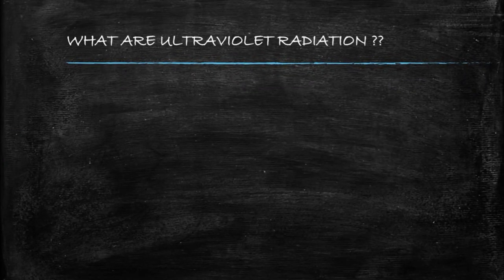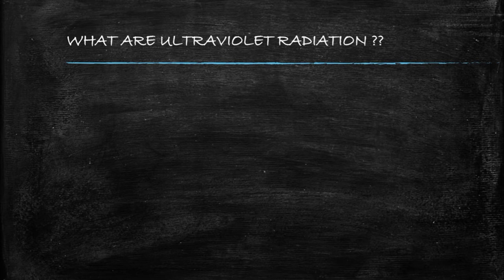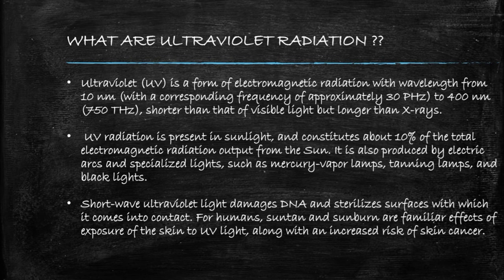Now let's see about ultraviolet radiations. Ultraviolet radiation is present in sunlight and constitutes about 10% of total electromagnetic radiation output from the sun. These radiations can also be produced by electric arc and specialized lights such as mercury vapor lamps, tanning lamps, and black lights.